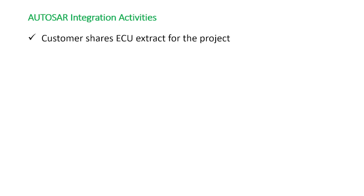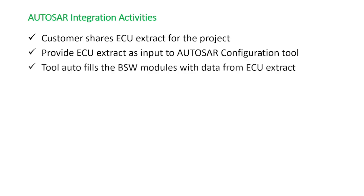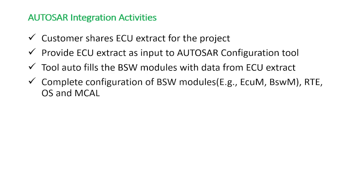Normally the customer gives an ECU extract which is relevant for that project. The OEM gives an ECU extract and the activity of integrating the ECU extract starts by importing the ECU extract into the AUTOSAR configuration tool. This tool autofills most of the BSW modules with the data from the ECU extract. And if there is any data that is not part of the ECU extract, the AUTOSAR integrator has to take care of filling these modules like ECM, BSWM, and some configuration — RTE, OS, and MCAL — manually. Then we have to generate the AUTOSAR modules because we need to get the generated files which are in the form of .c files, which basically reflect the configuration from the ECU extract.